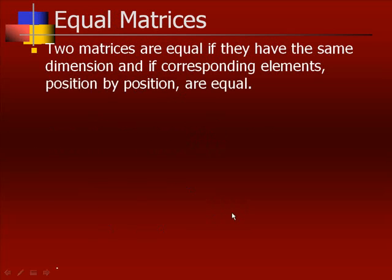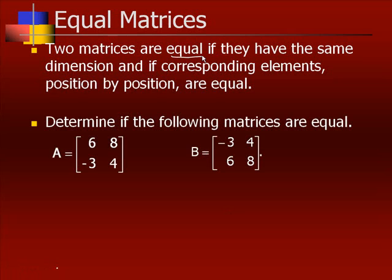Two matrices are equal if they have the same dimension and if corresponding elements, position by position, are equal. They have to be exactly the same.